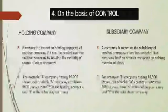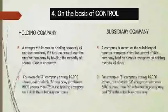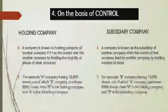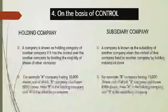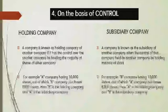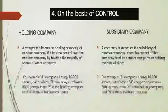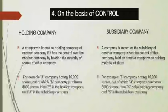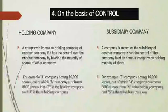The next classification is on the basis of control. Companies are classified into holding company and subsidiary company. A holding company controls the majority — minimum 51% — of shares of another company. A subsidiary company sells its majority of shares to another company. For example, if company A has 10,000 shares and company B purchases 8,000 shares, then B is the holding company and A is the subsidiary company.